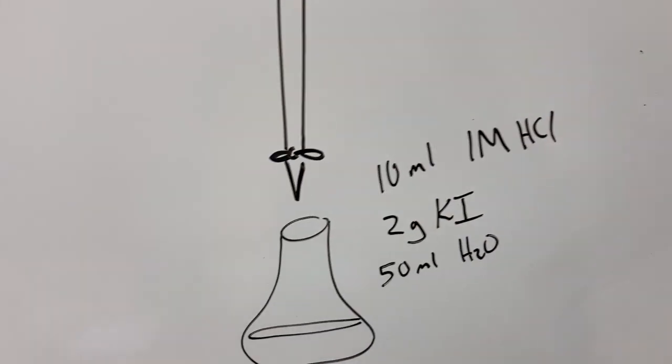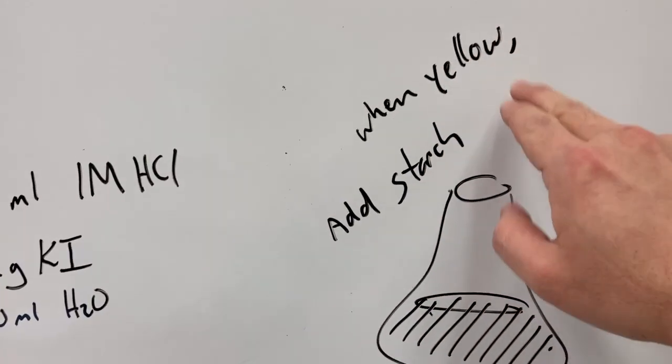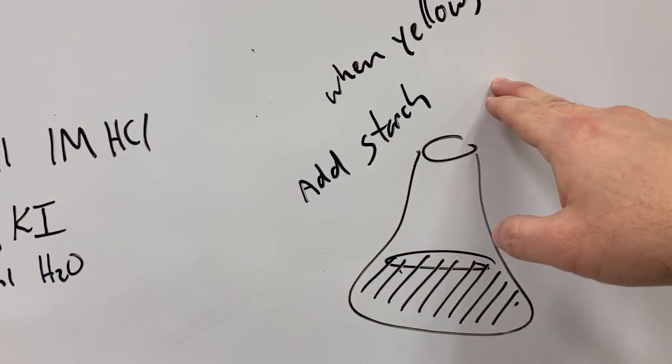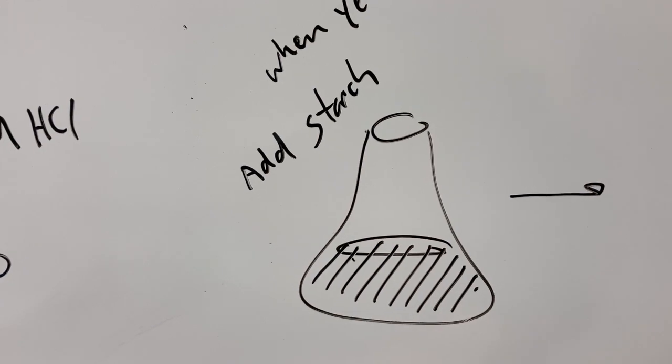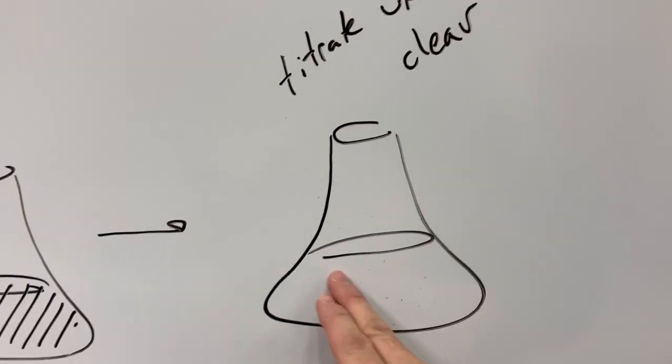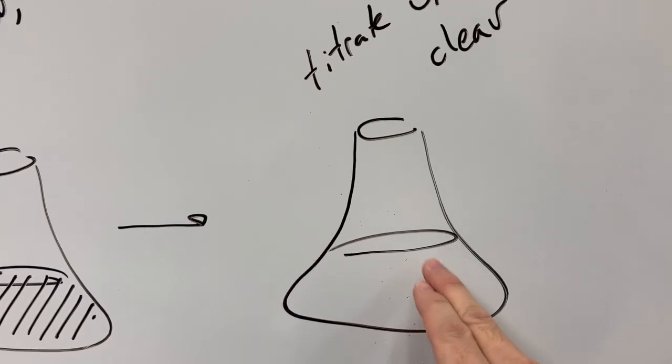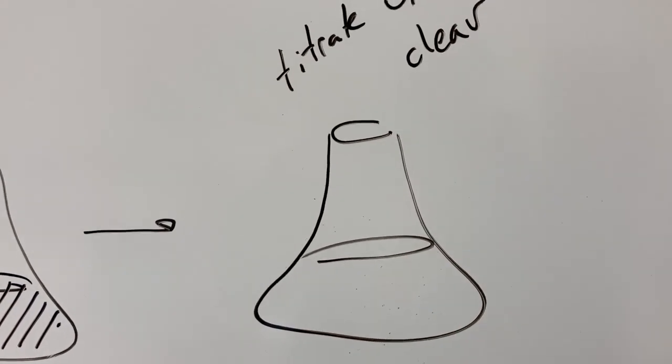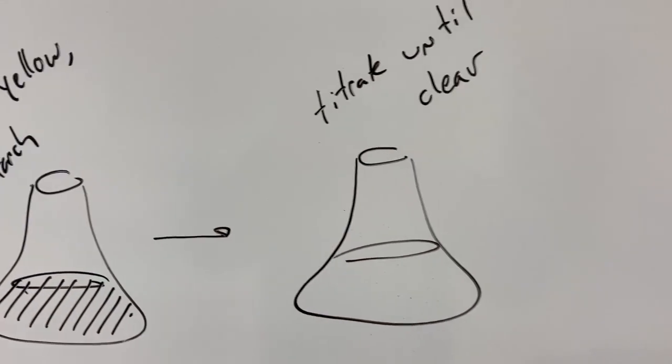So upon titrating our solution will turn eventually kind of like a school bus yellow. At that point we're going to add the starch solution. The starch in the presence of the iodine will immediately turn near black or really dark blue, and then we're going to continue to titrate until that blue color disappears. Once that blue color disappears, that indicates the lack of production of iodine and we know that all the iodate has been used up, and then we stop and we take our volume measurement.